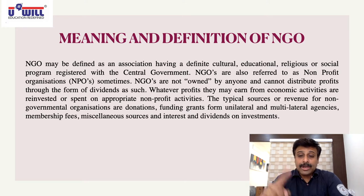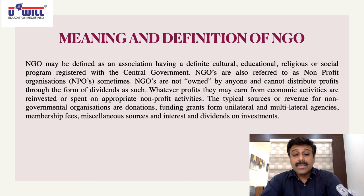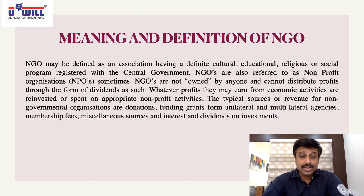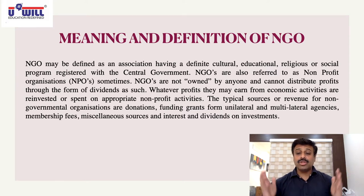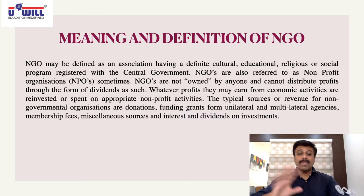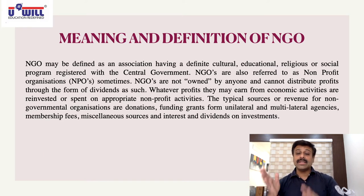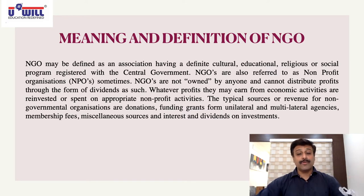NGOs are not owned by anyone and cannot distribute profits through dividends. It is an Association of Persons (AOP) — 10, 15, or 20 people come together and form an NGO for a particular social, religious, or any other cause. Anyone can exit or enter at any time, and they don't distribute profits. Whatever surplus is earned is used for the purpose for which the NGO was founded.